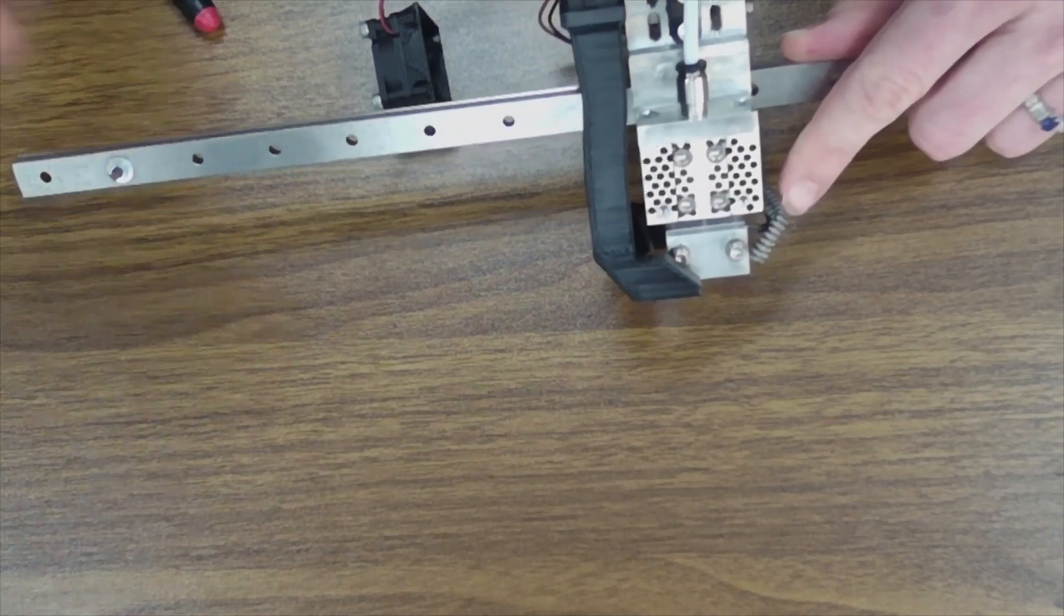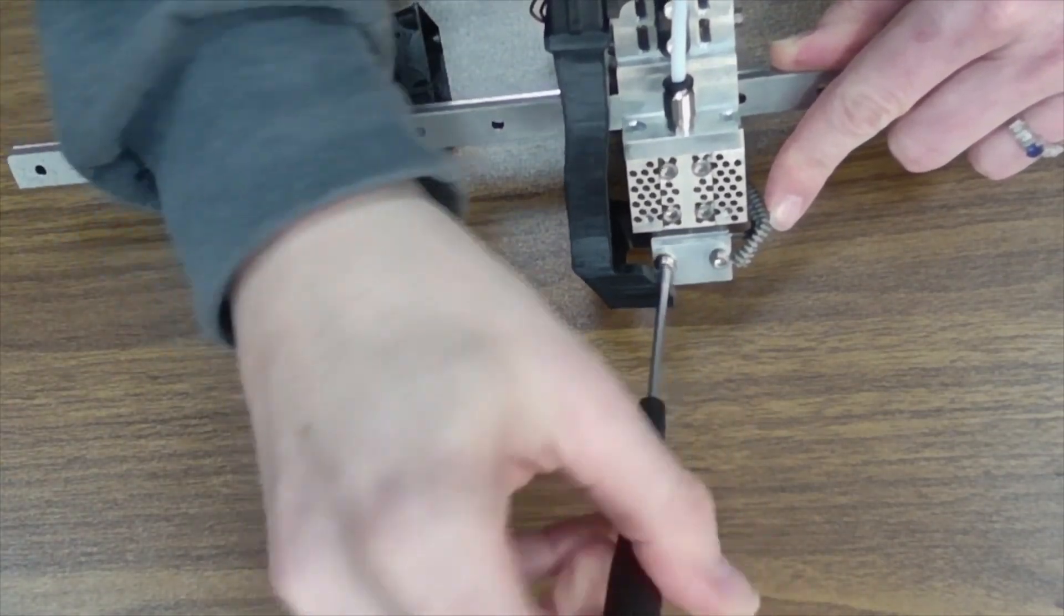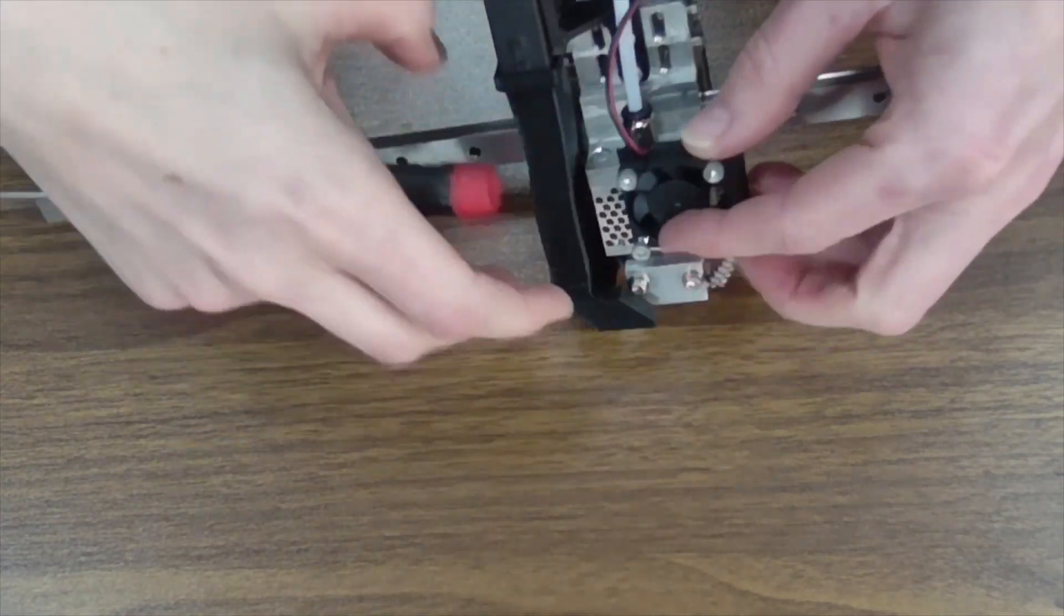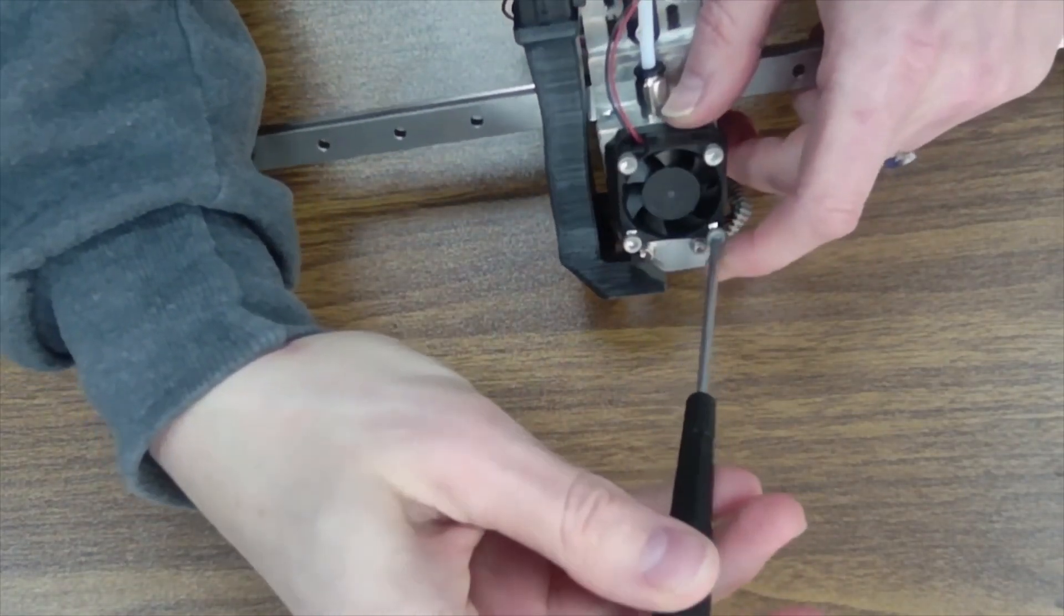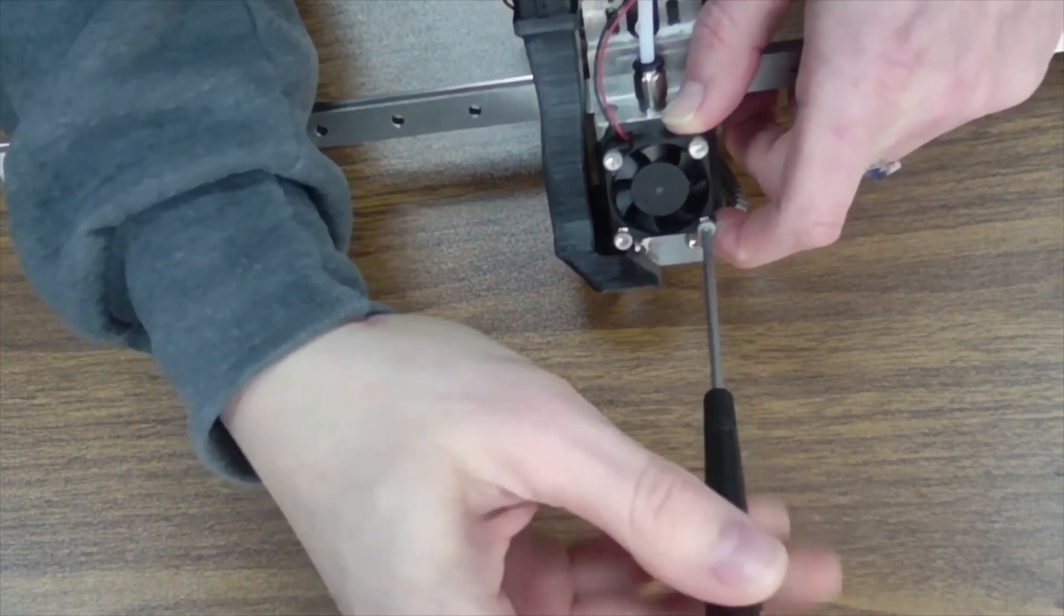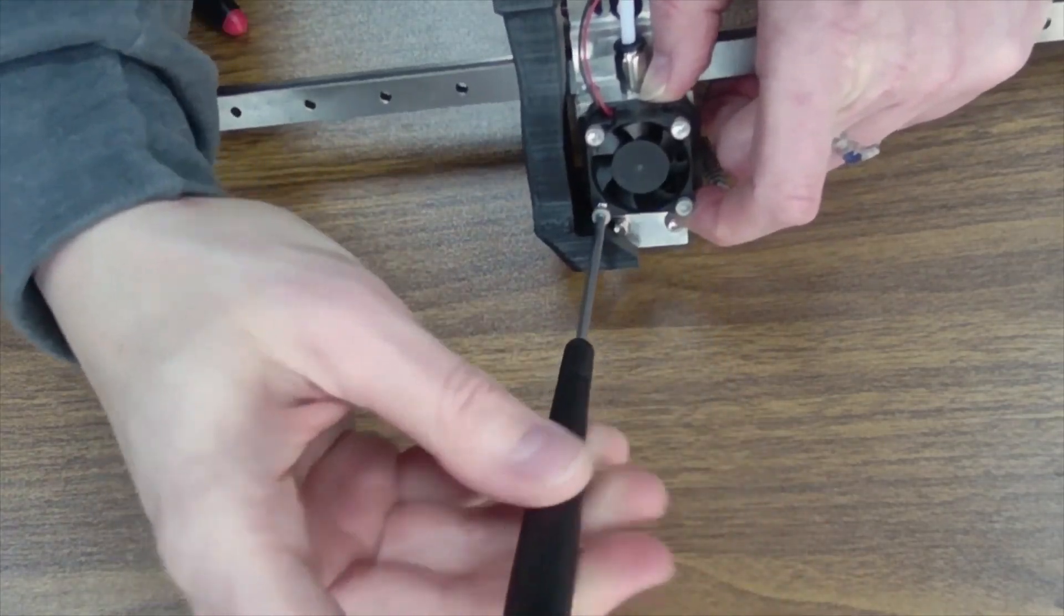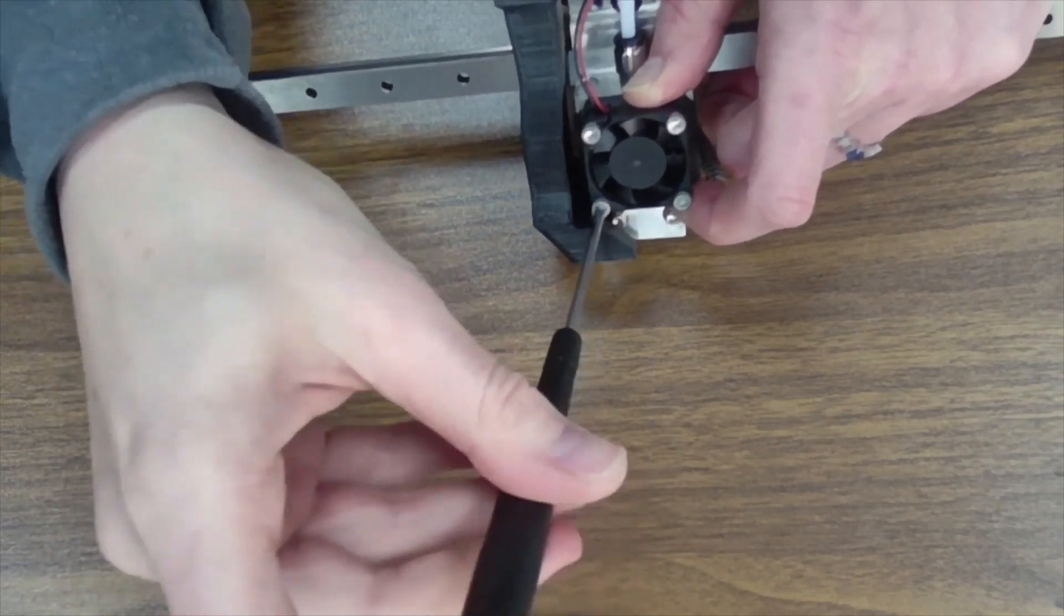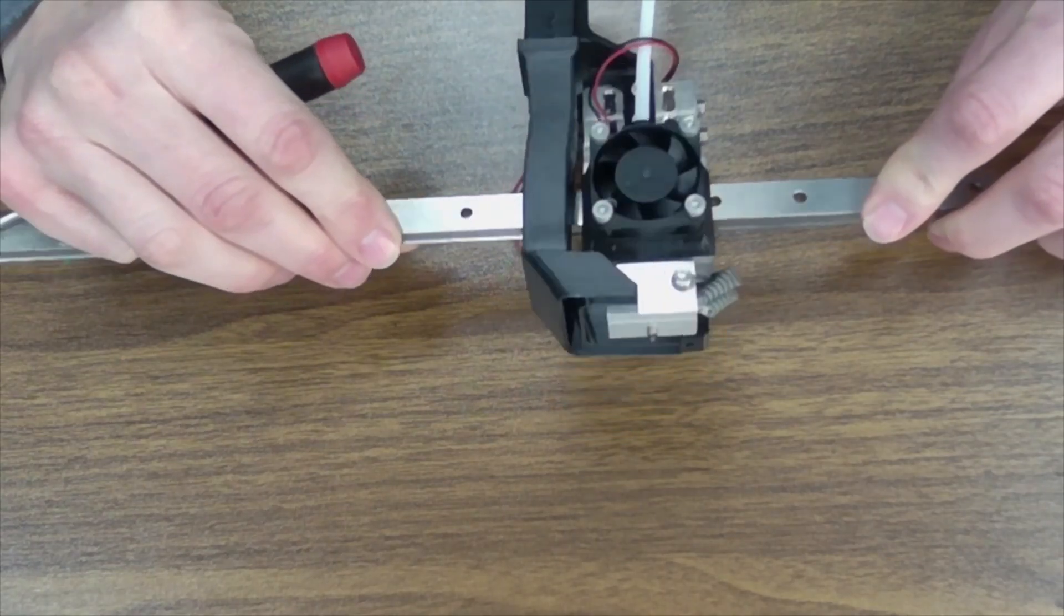And then obviously you need to re-tighten your hot section like so, and then reinstall your 30 millimeter fan. Again, this is actually easier when you have a printhead assembly in a machine versus one rolling around on a desk like I do. That's our printhead reinstalled and ready to go.